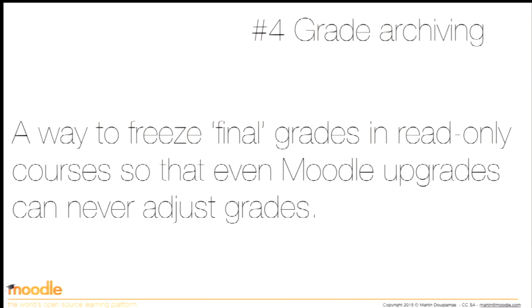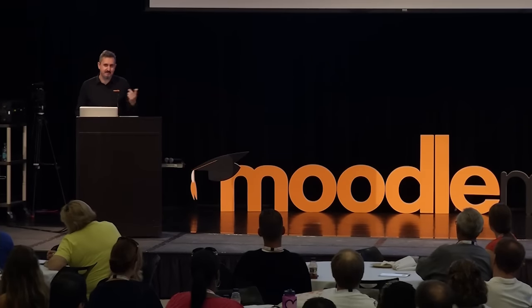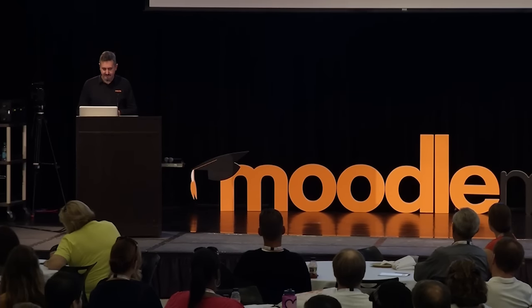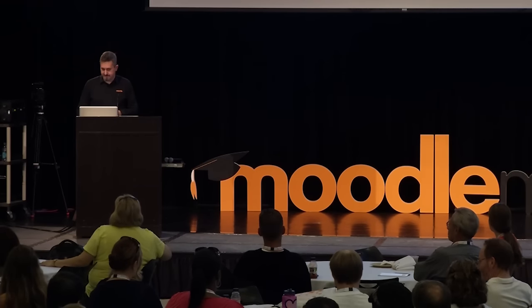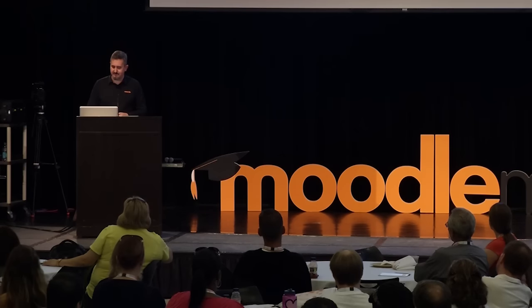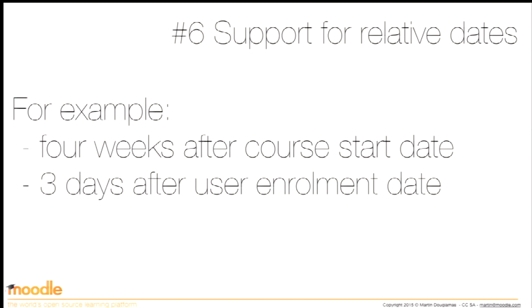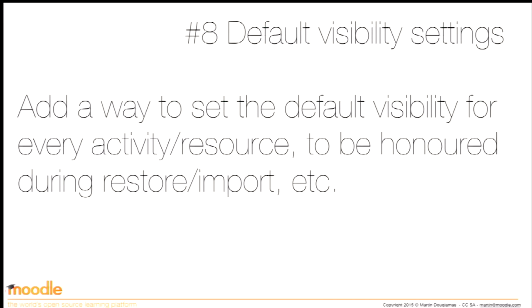Similarly, a lot of people wanted grade archiving, which is separate from a read-only course. This is to lock the final grades in a truly read-only way — like a PDF is read-only. So even if you upgrade Moodle and the code changes, the grades should never change; it doesn't matter if they're a result of bugs. We went through an issue about this just with 2.9 and 2.8. Relative dates was another one: assignments should be due four weeks after the course starts, or four weeks after you get enrolled. Better UI, default visibility settings, and so on.